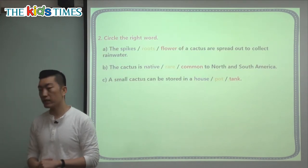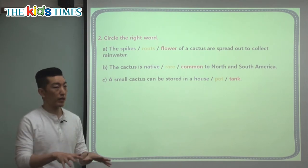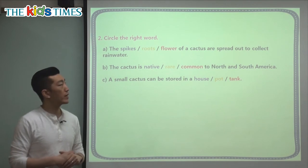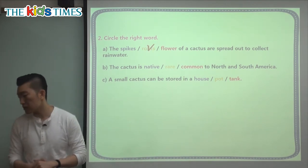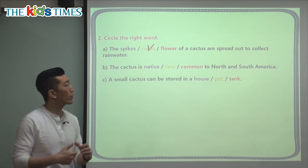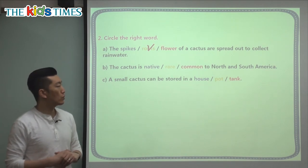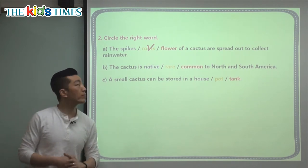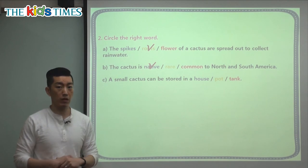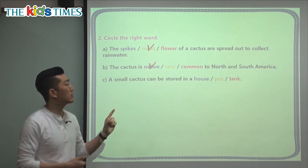Let's look at the comprehension section — choosing the right word. The spikes, the roots, or the flower of a cactus are spread out to collect rainwater? Spread out means spreading to a larger area, not together. The roots are underneath the plant and collect the water — not the flower and not the spikes. The roots spread out because the cactus usually lives in dry places and needs to collect all the rain it can. Is the cactus native, rare, or common to North and South America? Since it's found there and originally from there, native is the correct word — just like Native Americans who were first in America.